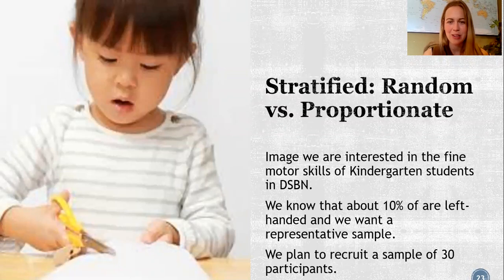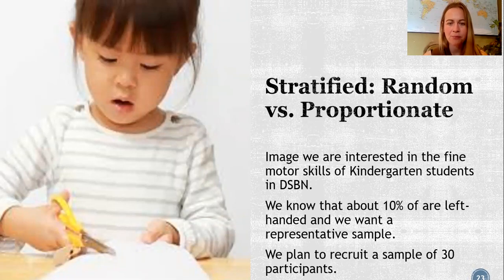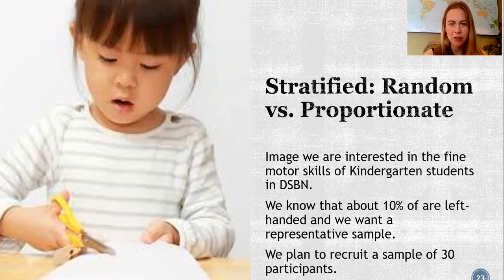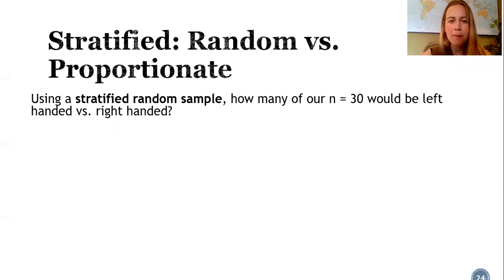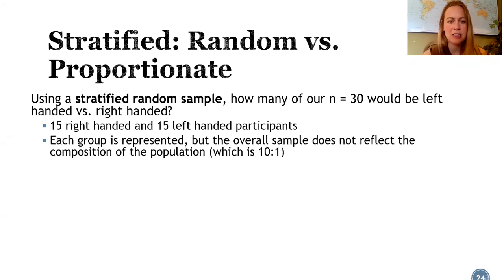Here's a concrete example. Imagine we're interested in the fine motor skills of kindergarten students in the Niagara school board — specifically, how well they're learning to cut with scissors. We know that 10% of kids are left-handed and we want a representative sample of 30 students. Using stratified random sampling, we'd select equal numbers from each group: 15 right-handed kids and 15 left-handed kids. Each group is represented, but the downside is the overall sample doesn't reflect the target population, where only 10% of kids are left-handed.